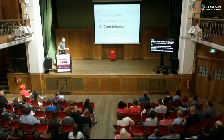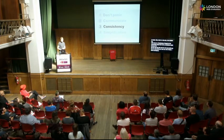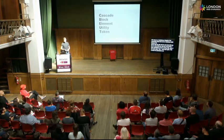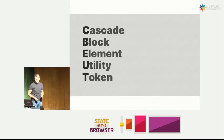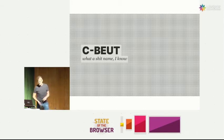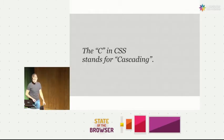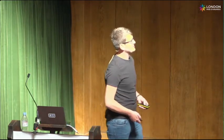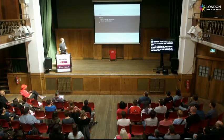Consistency. I think consistency is key to scaling CSS. For clients, I use this methodology called C-Bute — Cascade, Block, Element, Utility, Token. I'll explain what each one of those means, though I'll acknowledge C-Bute is a proper shit name, I know. The C in CSS stands for cascading, and cascading is easily one of my favourite parts of CSS — I think it's what gives it the great power that it has.